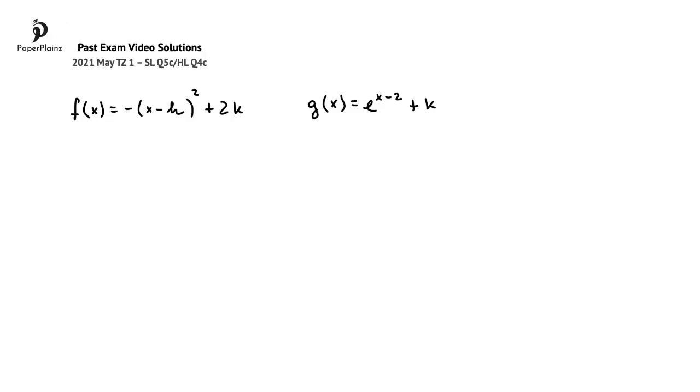Now, this information also implicitly tells us that the two graphs intersect when x is 3. This in turn means that f(3) is equal to g(3).